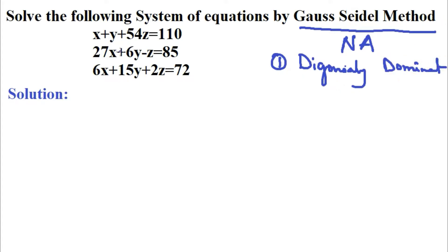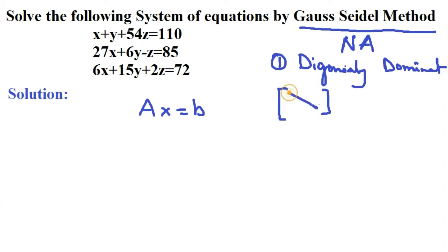Diagonal dominance is very important. If you change the system into the matrix form Ax = b, where A is the coefficient matrix of x, y, z; b is the right-hand side; and x is the vector of unknowns — the diagonal elements must be the largest in absolute value. Sign does not matter, whether positive or negative. So let me reassemble the equations in that manner.